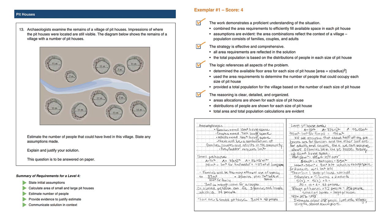Archaeologists examined the remains of a village of pithouses. Impressions of where the pithouses were located were still visible. The diagram below shows the remains of a village with a number of pithouses. Estimate the number of people that could have lived in this village. State any assumptions you have made. Explain and justify your solution.